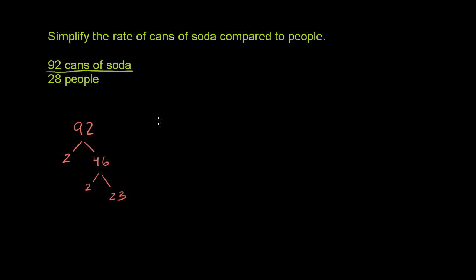If we did the prime factorization of 28, 28 is 2 times 14, which is 2 times 7.